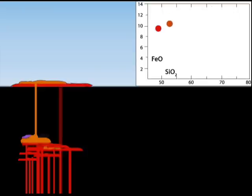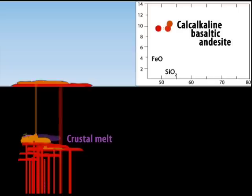As basalt input continues, some crystallizes to gabbro, changing the composition of the crust, warming the crust to the point where partial melting occurs.